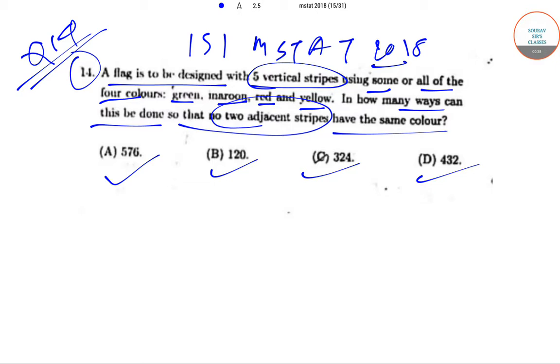So a flag is to be designed with five vertical stripes and there are four colors available out of which we can use some or all of the four colors. The four colors are green, maroon, red and yellow. And we have to find out the number of flags in which no two adjacent stripes have the same color.